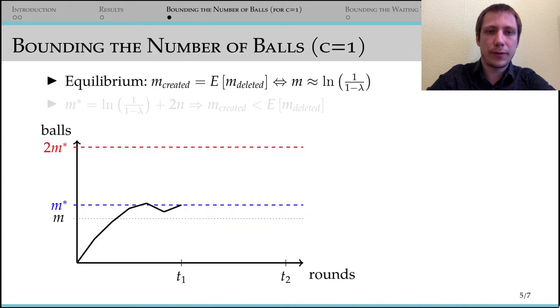Now let's have a look at the analysis. Consider the case where the capacity is one. Since we delete one ball from each non-empty bin, all bins are empty at the end of each round. Therefore, we can fully describe the state of the system at the end of a round by the number of unallocated balls. This greatly reduces the complexity of the analysis.